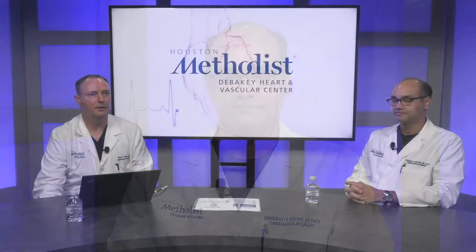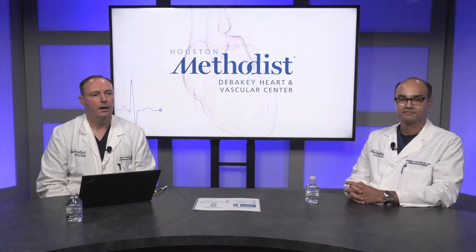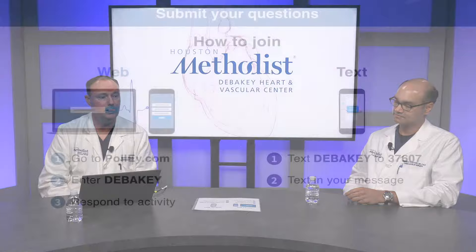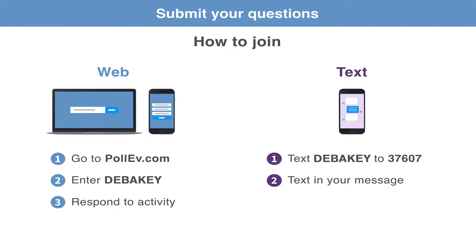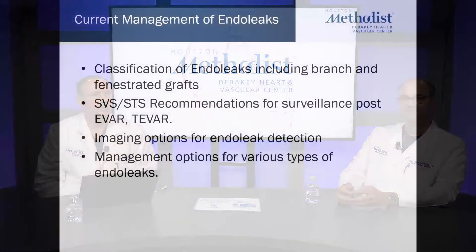We'd like to invite our audience to participate. You can connect via the web — go to pollev.com and type in the word DeBakey (D-E-B-A-K-E-Y) to log in and submit questions. The other way is by text: text the word DeBakey to the number 37607. We'll try throughout the course of this evening to respond to your questions and comments.